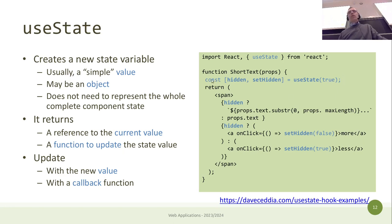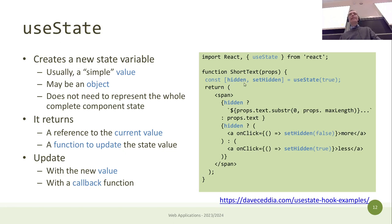The parameter passed to useState is just the initial value of the state. So we define a state within our component called 'hidden'. It takes props as usual and we can use the value 'hidden' wherever we like, just as with props — the only difference is that it's a state, so we don't write props.something; it's a variable defined within the function.